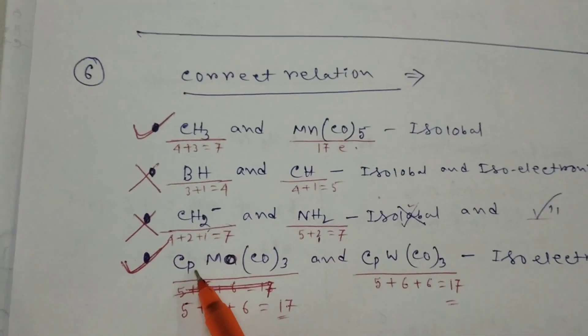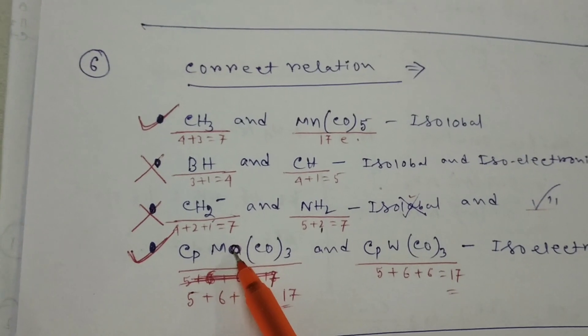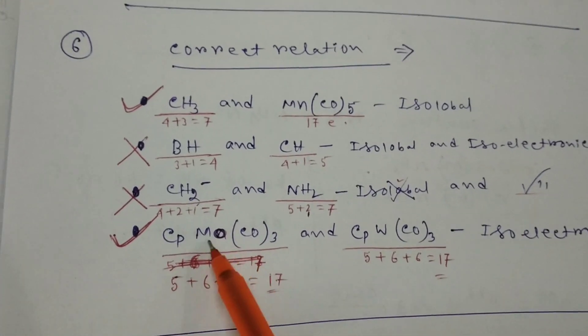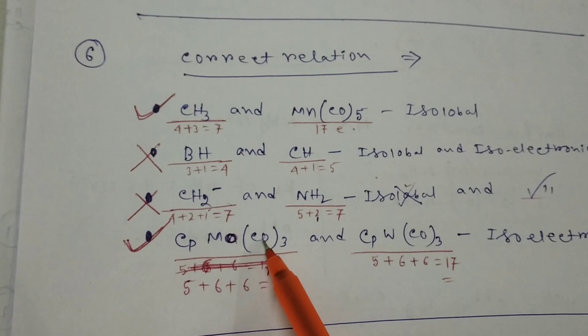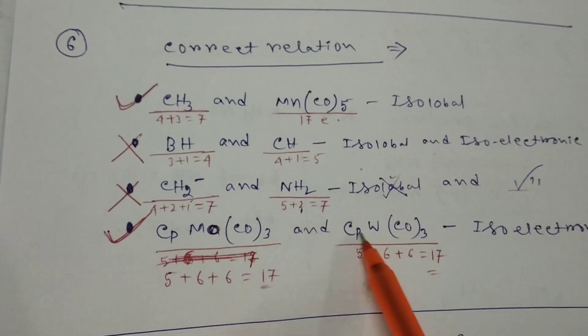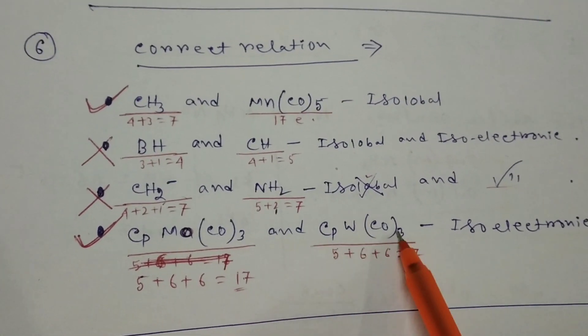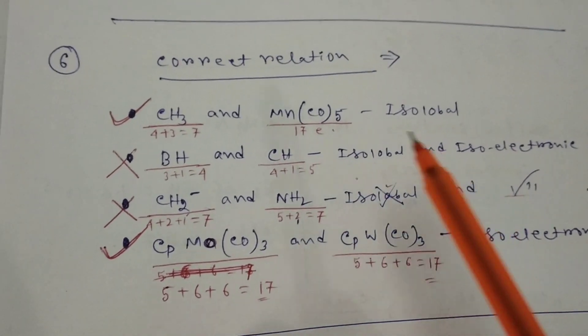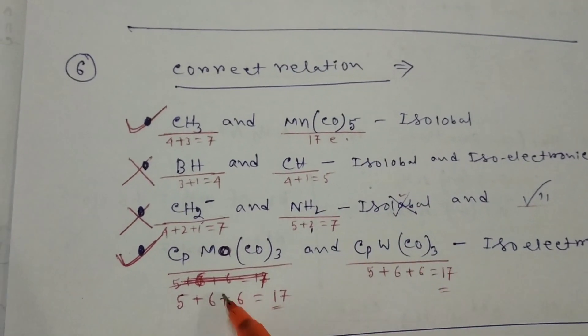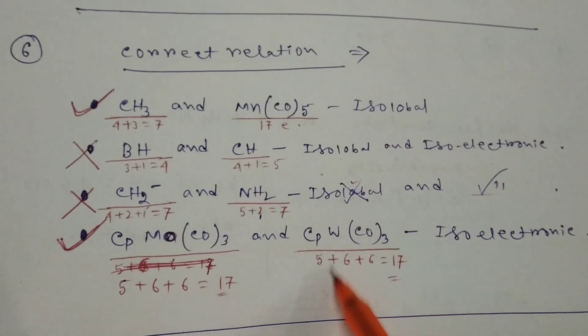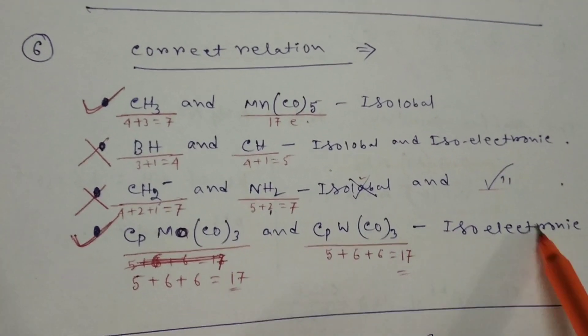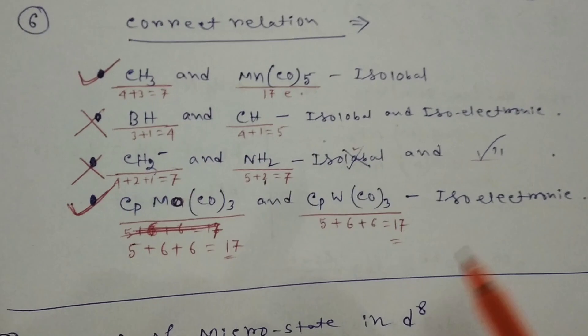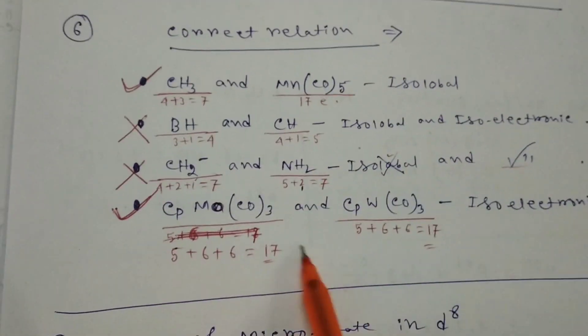Fourth, Cp-Mo(CO)3 and Cp-W(CO)3: total electrons will be 5 plus molybdenum 6 plus 3 CO equals 17. For tungsten, same because chromium, molybdenum, tungsten are in same group, so total 17. Both have 17 electrons, so these are isoelectronic species. First and last are correct options in MSQ.